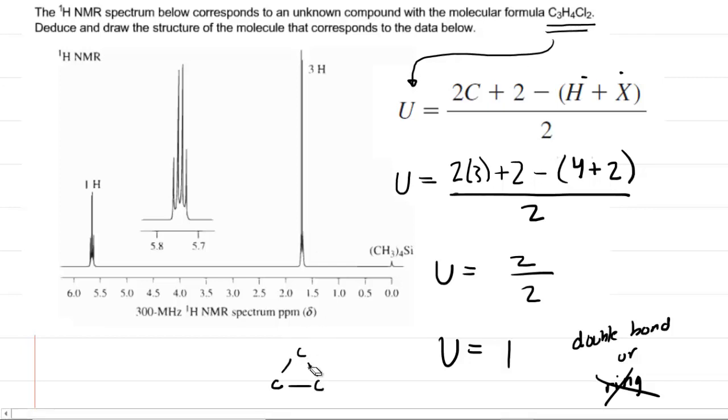These are very unstable and they're very rarely found in these types of questions. So a ring seems unreasonable. We're going to go with the double bond. So in fact, we can start to build a structure because we have 3 carbons and there's a double bond in the structure. So far so good. Let's look at the proton NMR next.